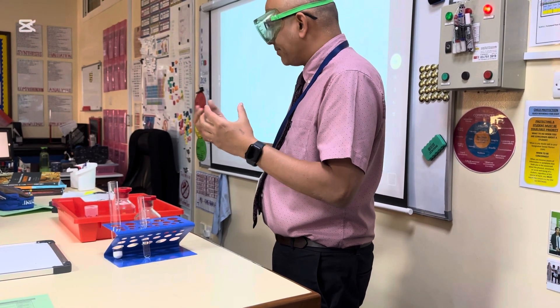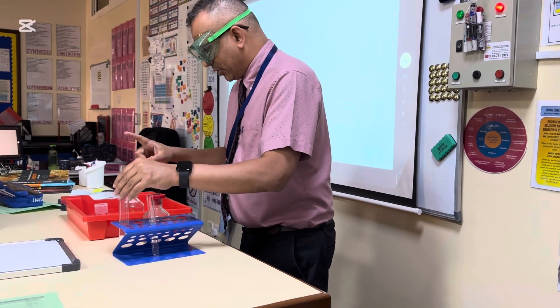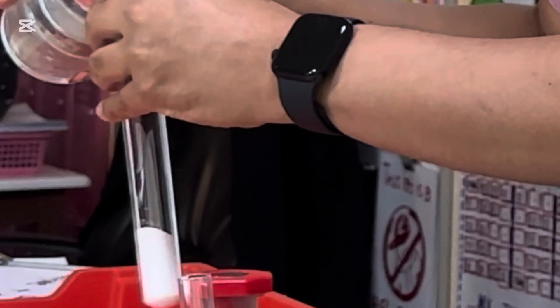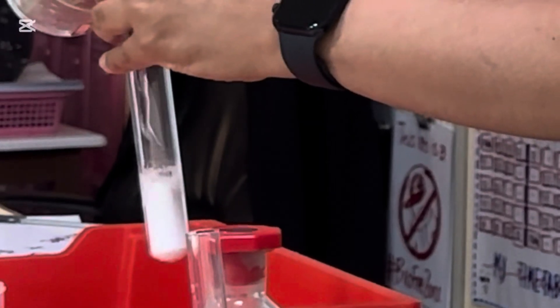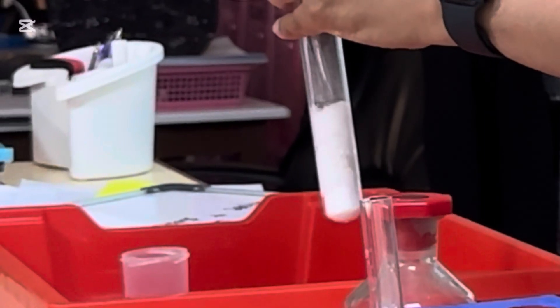Right. So what I've now got to do is I've got to add the sulfuric acid. Let's pour it. This is the sulfuric acid. And you can already see some bubbling taking place, which is a great sign.